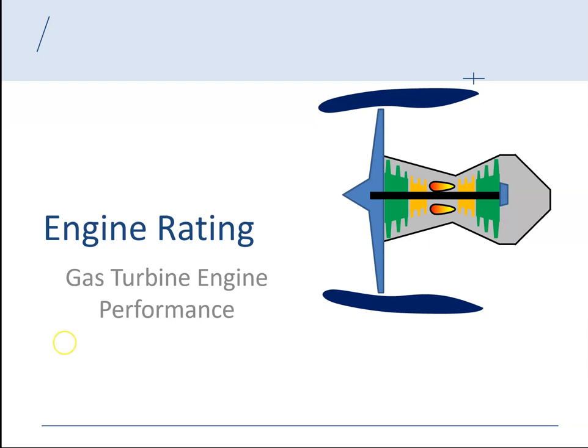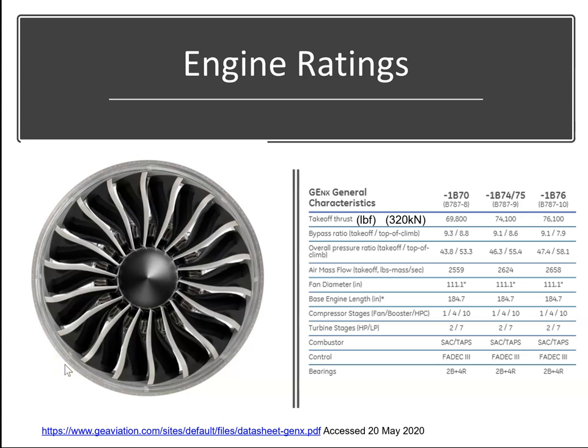We begin by looking at the specification of an engine, and in this case we're looking at a GENX-1B engine. Let's take this one here for example, this 1B engine. So they're telling us that the takeoff thrust is 60, let's say 70,000 pounds, which equates to about 320 kN.